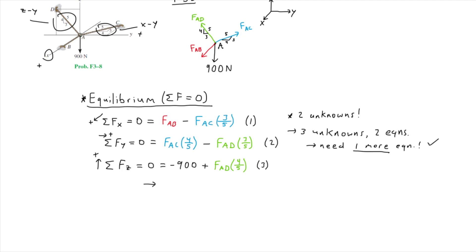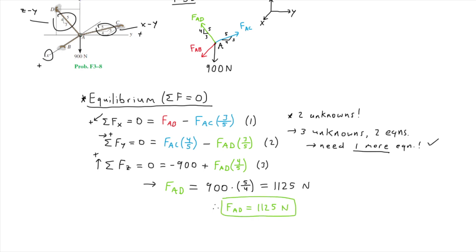Thanks to the known 900 newton force, we can directly solve equation three for FAD. Isolating FAD, we add 900 to the other side and multiply by the reciprocal of the fraction, giving us FAD equals 900 times five over four. Putting this in a calculator gives us 1125 newtons, so the tension in cable AD is 1125 newtons.